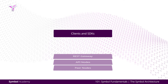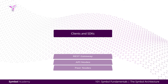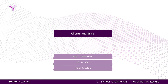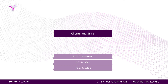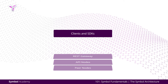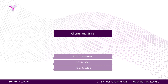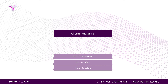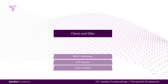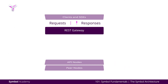Through its higher level of abstraction, the SDKs free up developers to focus on product development rather than on the Symbol-specific API details. The SDK connects directly with the REST node, which makes up the next tier.